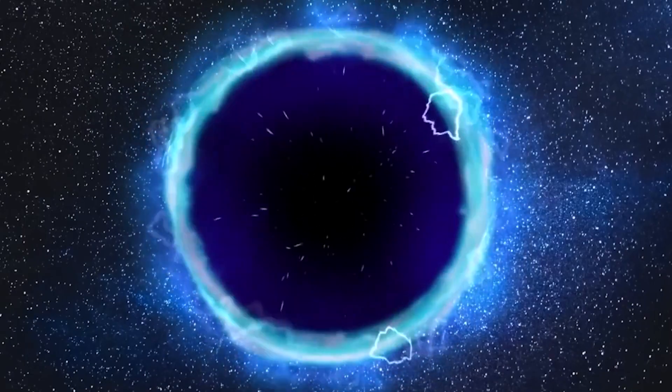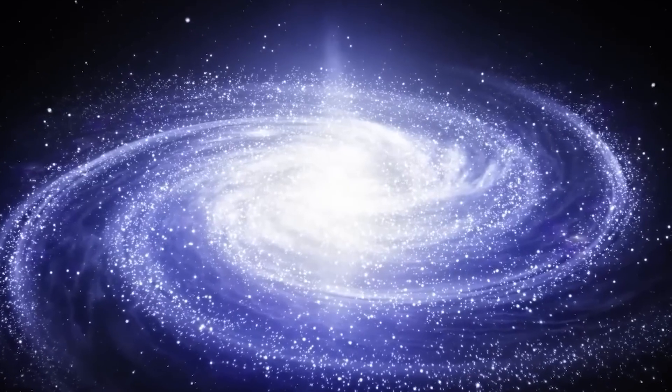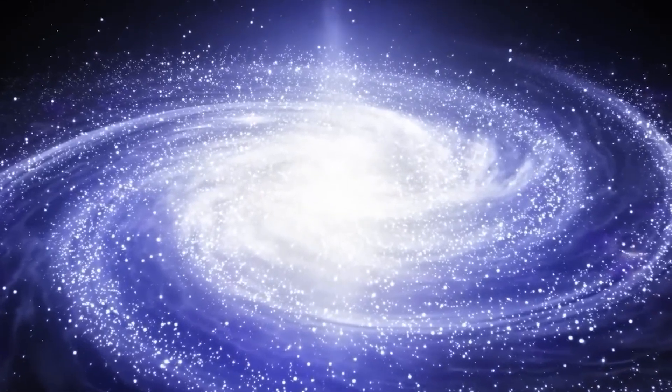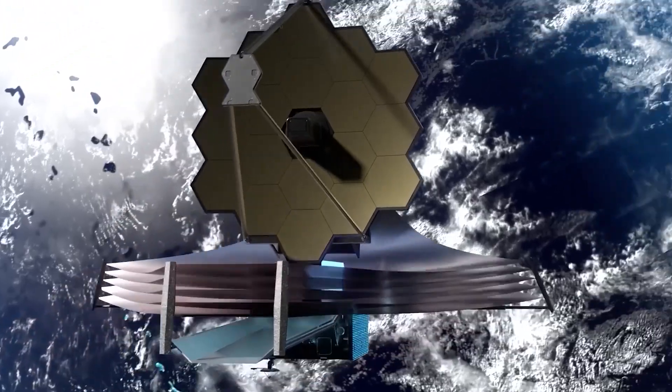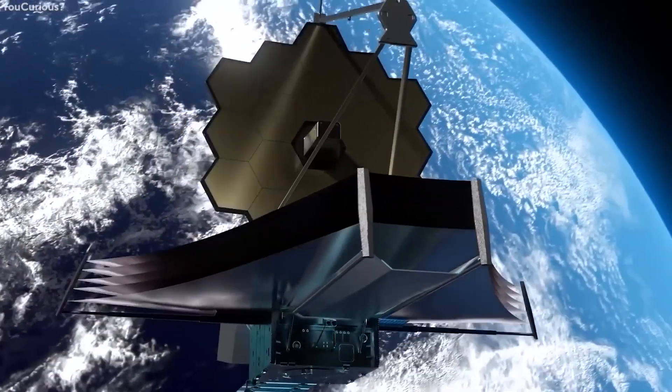This curvature can be so extreme that light's path through it is also curved. If light from a background object passes through a body of extreme mass in the foreground on its way to Earth, the background object may appear to have moved in the sky.